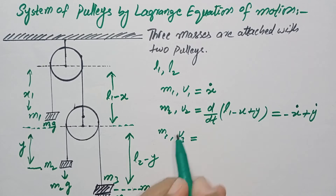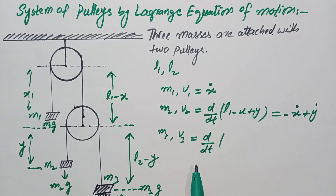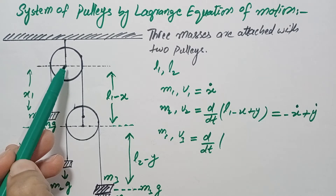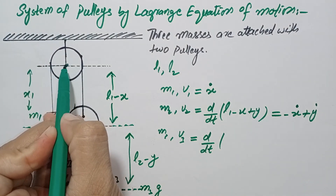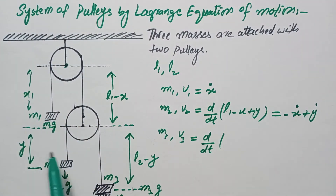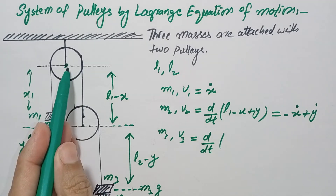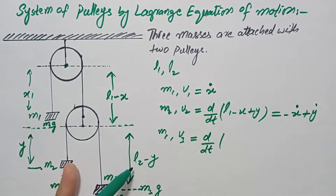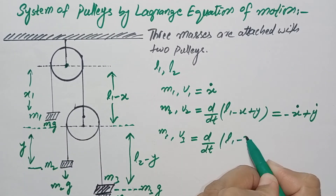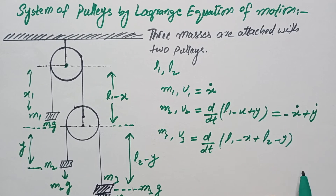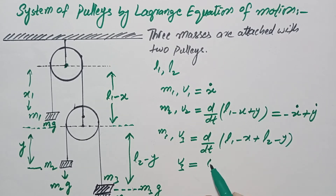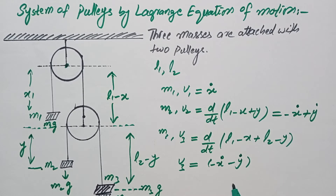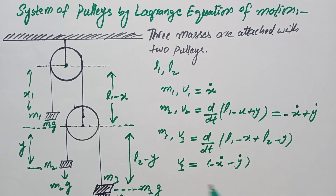The velocity of mass m3, v3, is the time derivative of the position of m3 from the center of the first pulley. This position is l1 minus x plus l2 minus y. Taking the time derivative, l1 and l2 are zero, so we get minus ẋ minus ẏ. So these are the velocities of the three masses m1, m2, and m3.